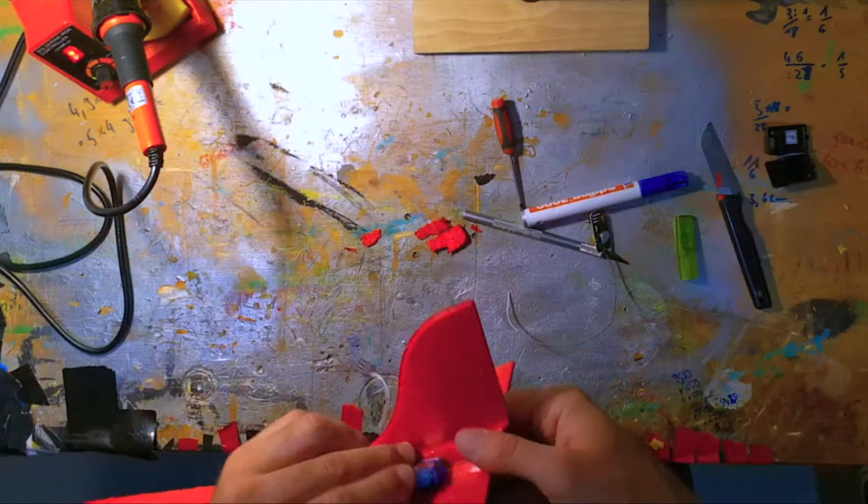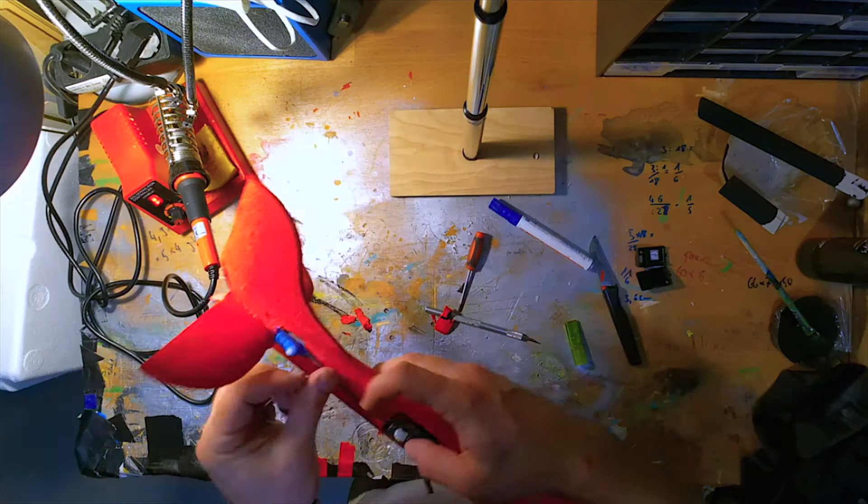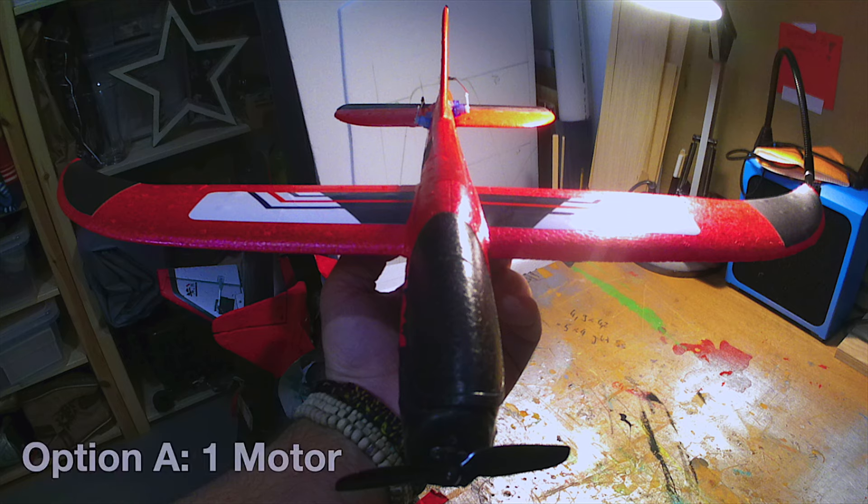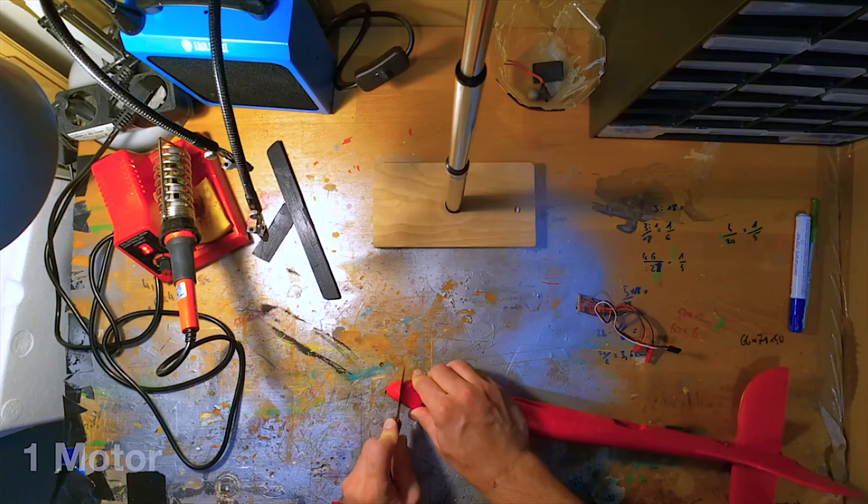Now we have to decide which motor option we want to build into the airplane. Or in other words, Bob Ross would say you have to make these big decisions. Option A is one motor in the front nose. Option B is two smaller motors.